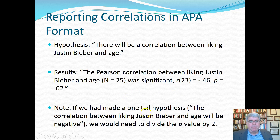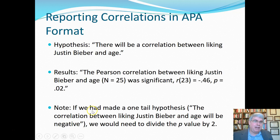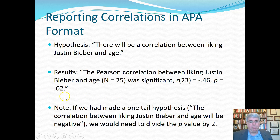Now, if we had made a one-tailed hypothesis — for example, that the correlation between liking Justin Bieber and age will be negative, which we might have been able to guess — we would need to divide the p-value by 2, so we would have reported p equals 0.01.